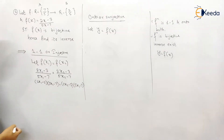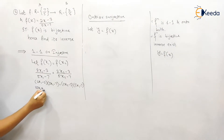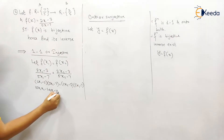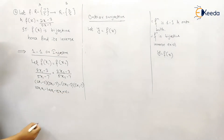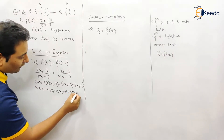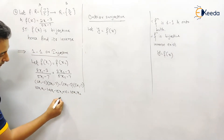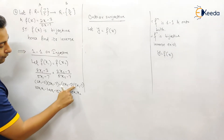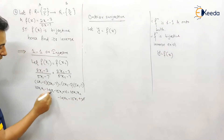Cross multiplying gives: (2x1 minus 3)(5x2 minus 7) = (2x2 minus 3)(5x1 minus 7). Opening the brackets: 10x1x2 minus 14x1 minus 15x2 plus 21 equals 10x1x2 minus 14x2 minus 15x1 plus 21.